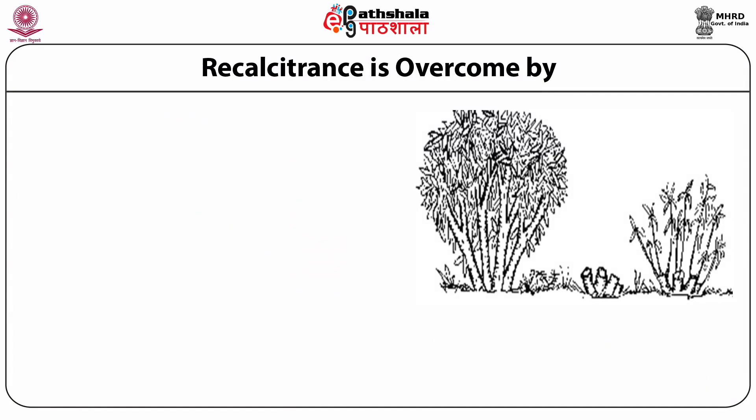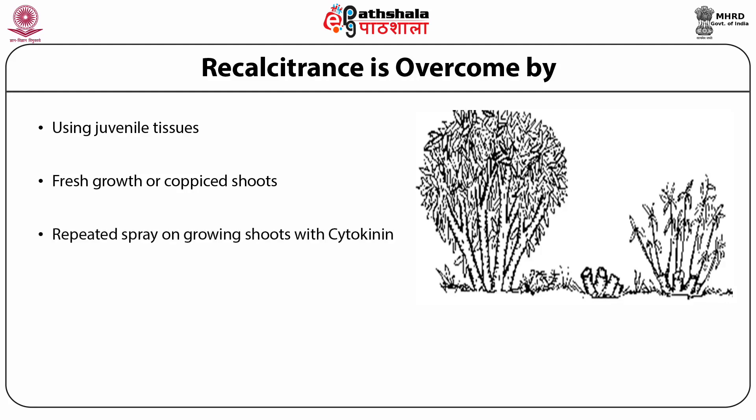What happens especially in perennials is that with age, the plant loses its capacity to regenerate. This is also true for vegetative methods of propagation — for example, if you have to take cuttings, plants in the juvenile phase are far more responsive than in the adult phase. Fortunately, there are procedures available whereby you can rejuvenate an adult tree. One technology is that you cut it at the stump and then you start getting shoots — what we call coppice shoots. These coppice shoots are excellent material both for inducing vegetative cuttings and for taking explants. Similarly, repeated spray of growing shoots with cytokinins gives you explants which are far more responsive, because they already have elevated endogenous cytokinin levels and because of fast growth they are more juvenile.